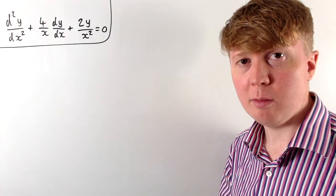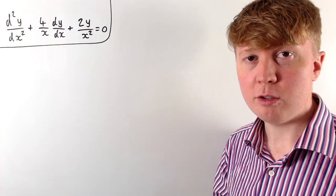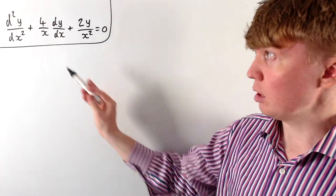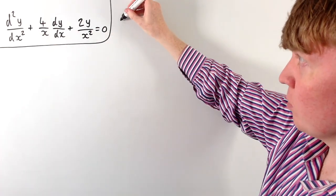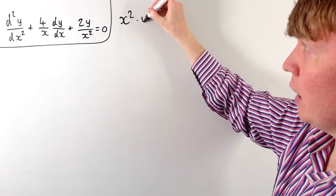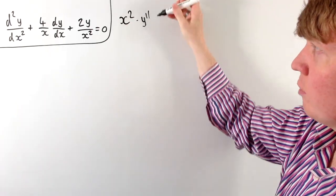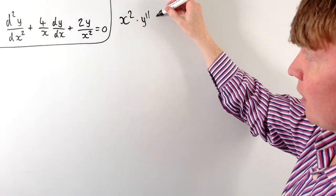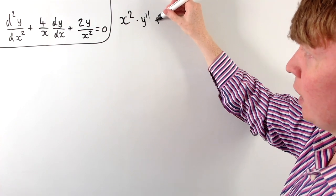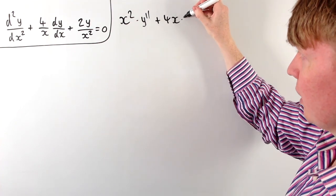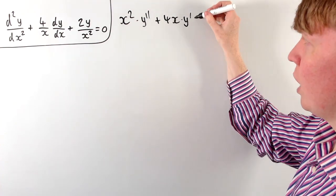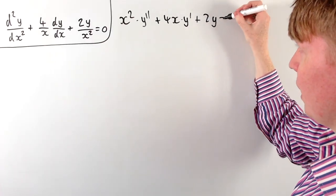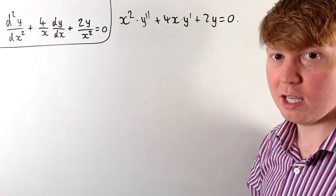Our first step to solve this is to multiply through everything by x squared. This gives us the second derivative multiplied by x squared — we'll write the second derivative using prime notation, y double prime. Then our next term becomes 4x times dy/dx, written as y prime. The last term gives us 2y, and this is all still equal to zero.